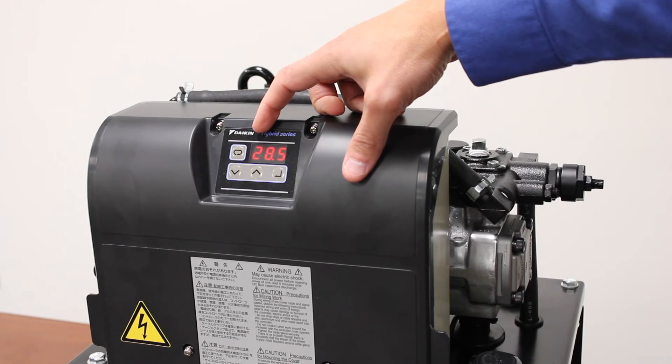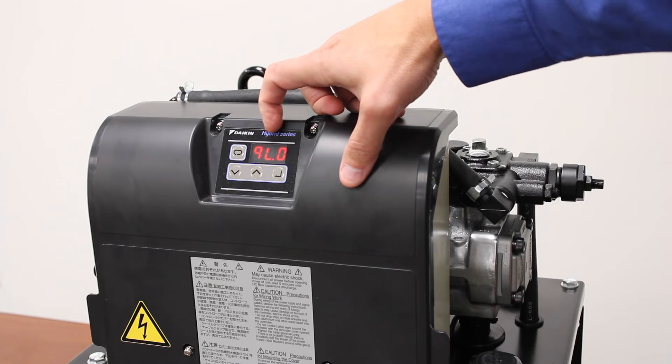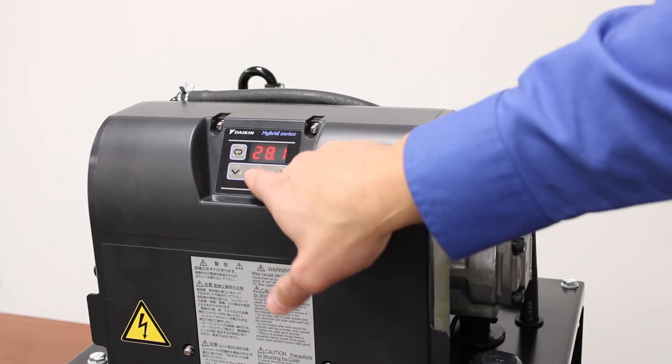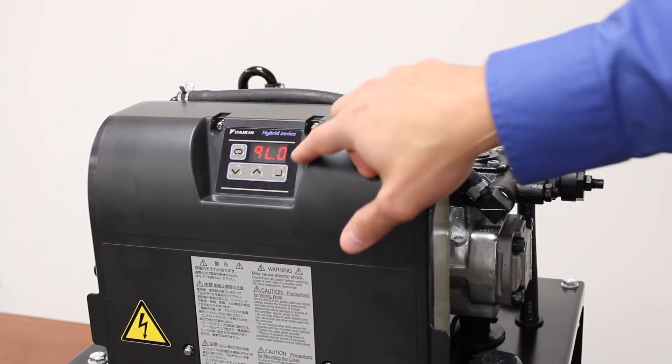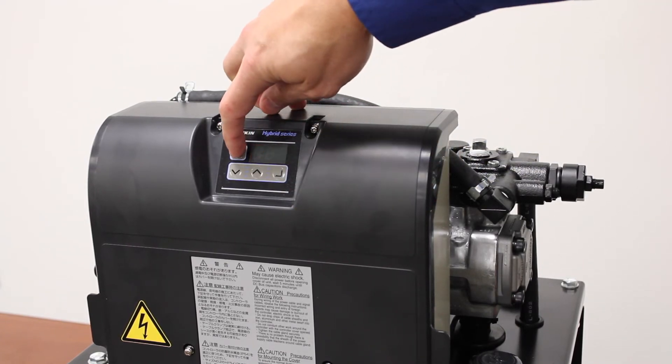The next thing you'll see come up is QL0. It looks like a 9 but it's a lowercase Q. This is your flow, which is currently at 28 and a half liters per minute on this unit. If you want to reduce that, use your down arrow, then hit enter to save your setting.